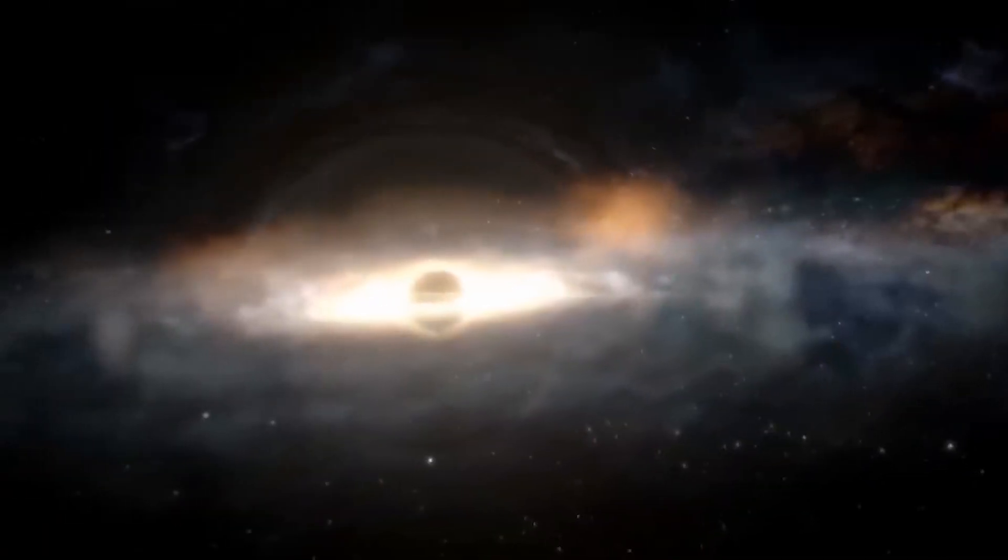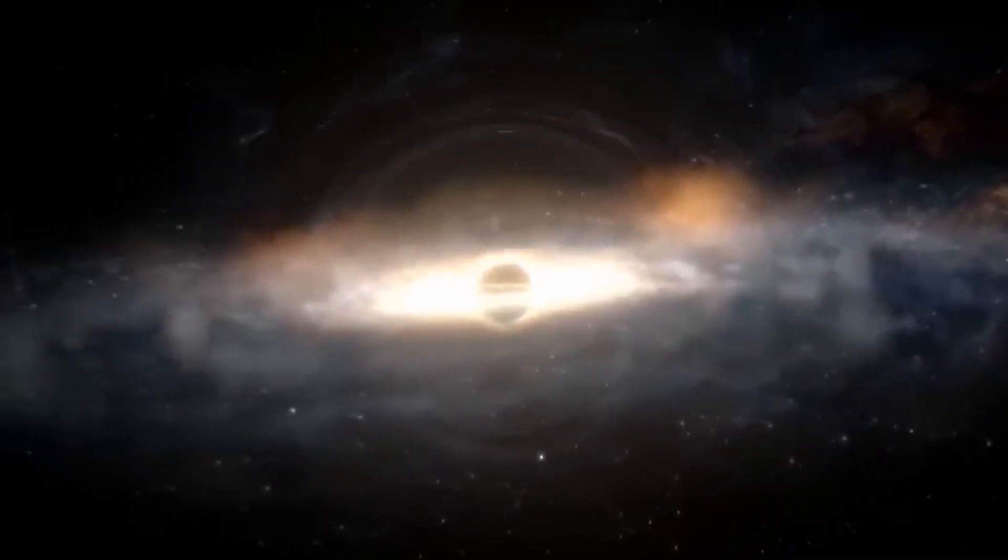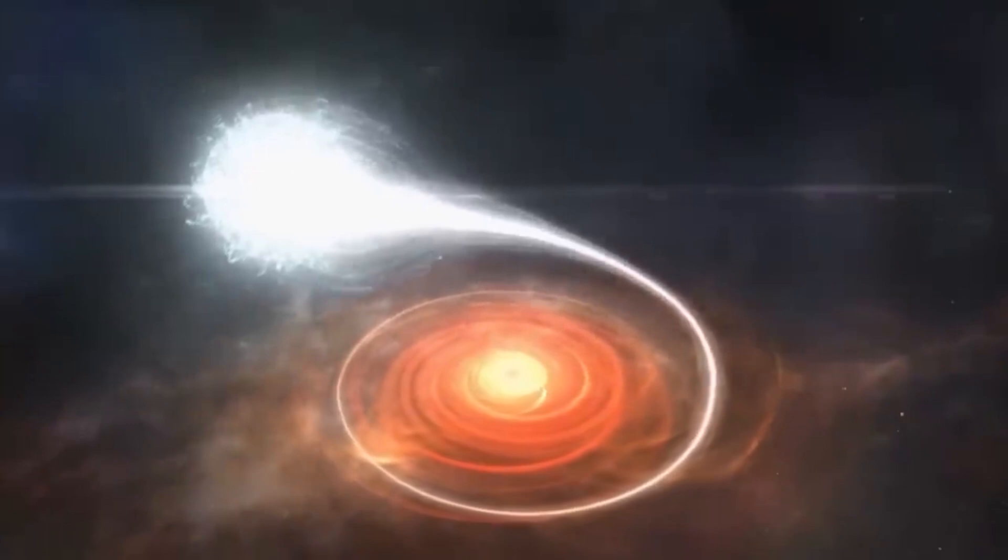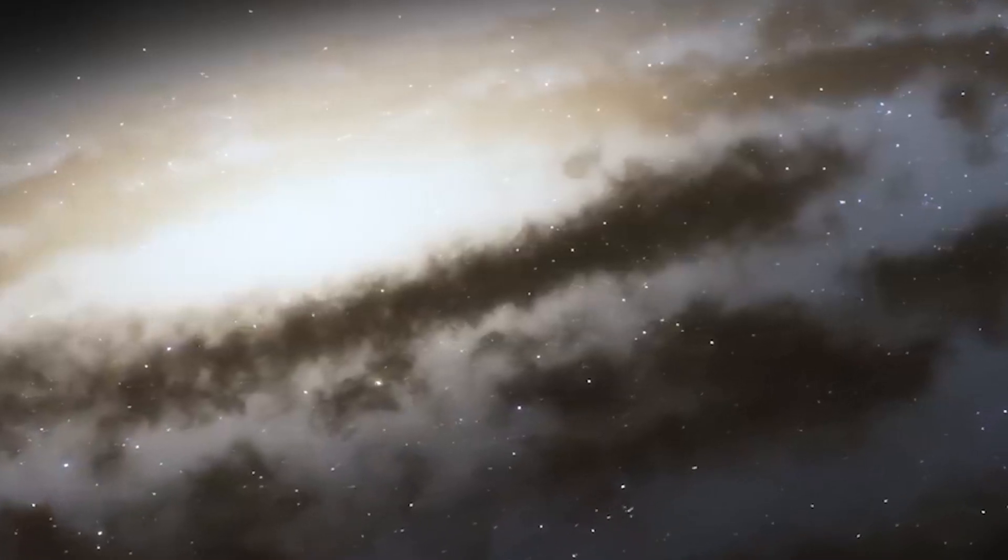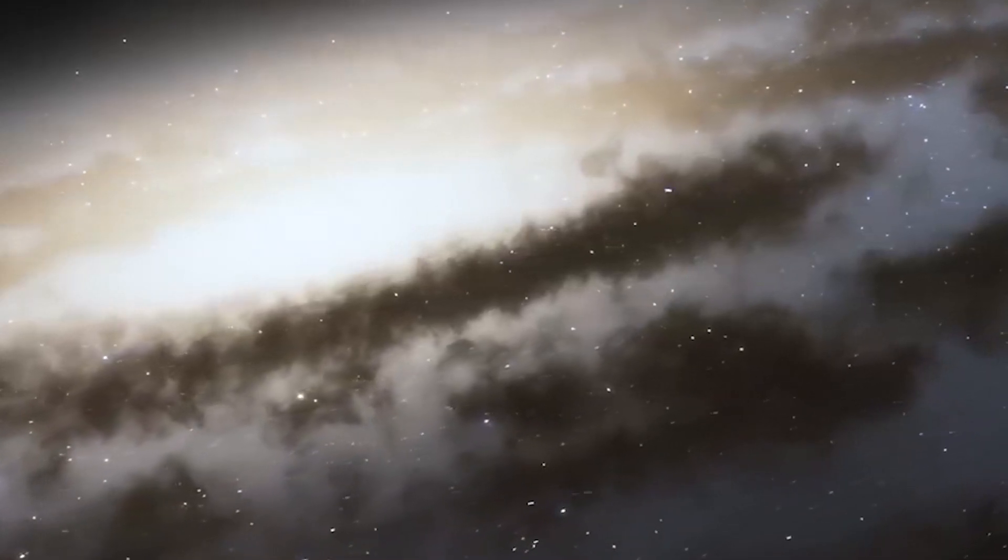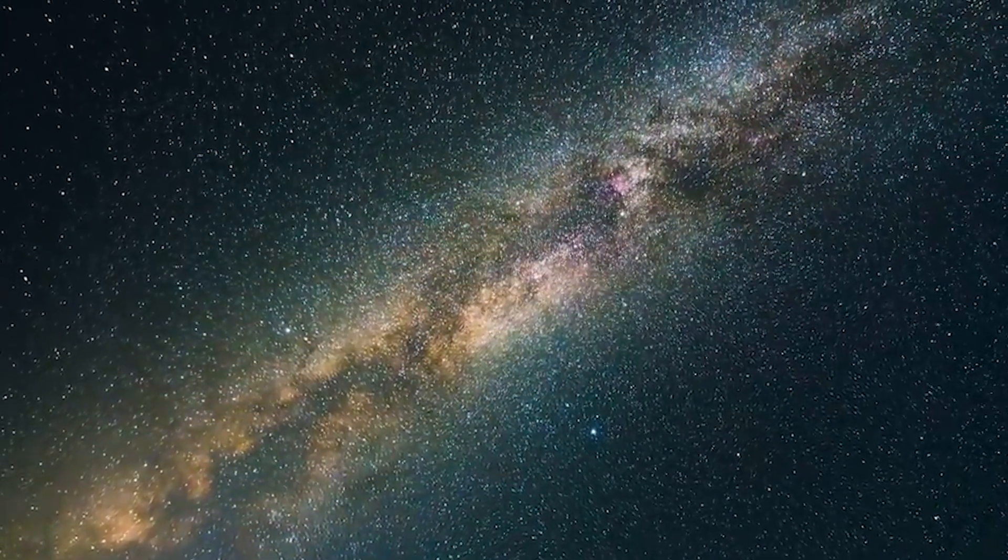The termination shock, where the solar wind rapidly slows down due to collision with interstellar plasma, has been traversed by Voyager 1 and Voyager 2. Voyager 1 and Voyager 2 both passed through the shock in December 2004 and August 2007, respectively.